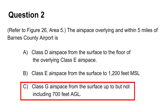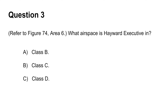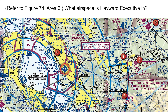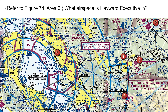The third question asks you to identify the airspace that Hayward Executive Airport is located in. Looking at the airport location, we can count 4 controlled airspace classes that surround Hayward Executive Airport: namely Class B, Class C, Class D, and Class E. However, we must focus on the airspace where the airport is located on the surface.